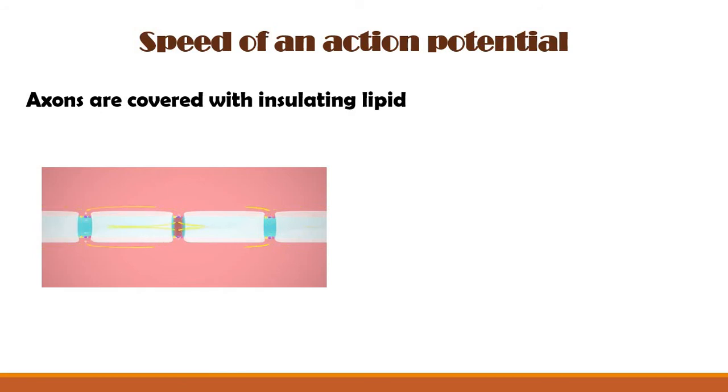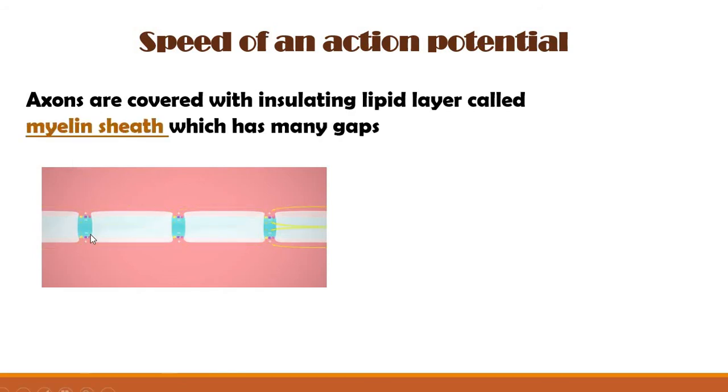Axons, like we said before, are covered with myelin sheaths, which is a lipid layer. These myelin sheaths have many gaps along the length of the axon. These gaps are called nodes, Ranvier nodes. This is a node between the myelin sheath. It is called Ranvier node.